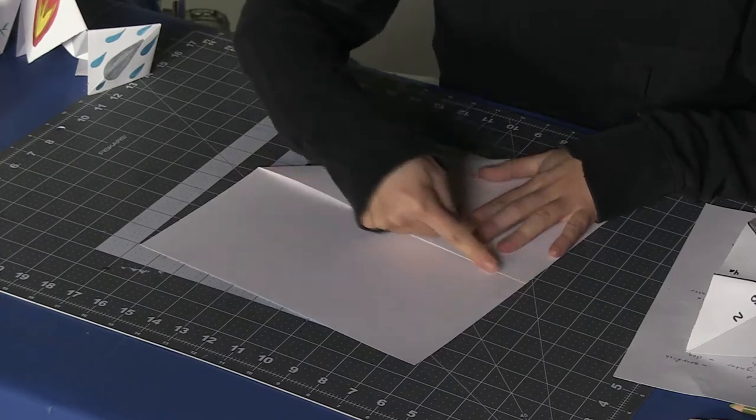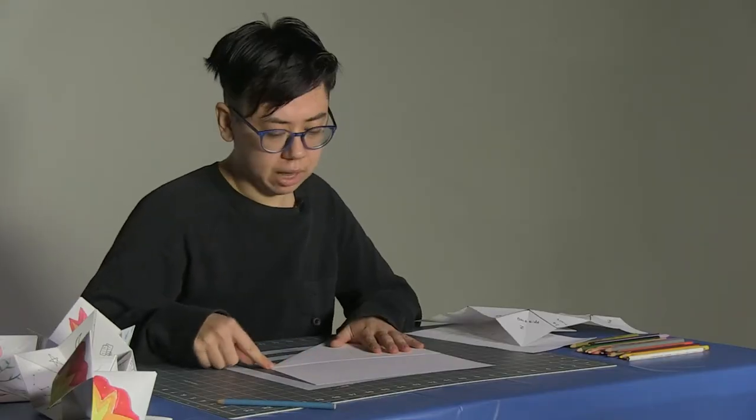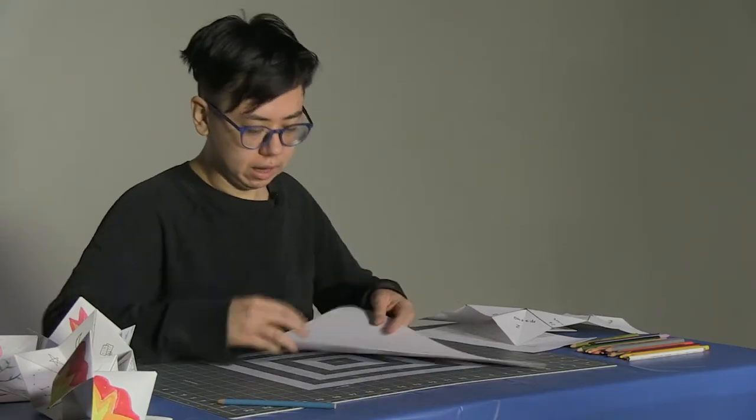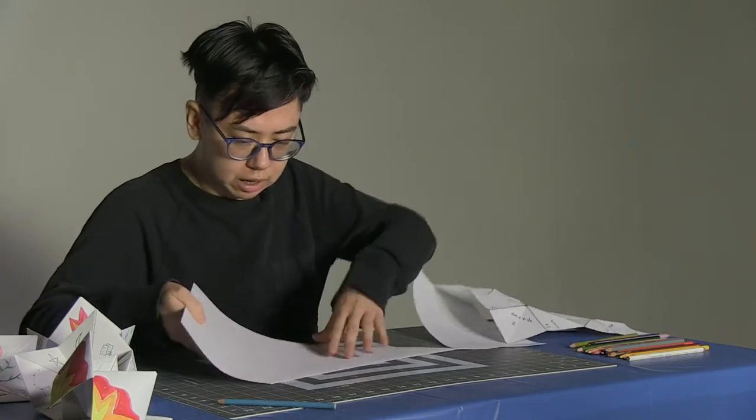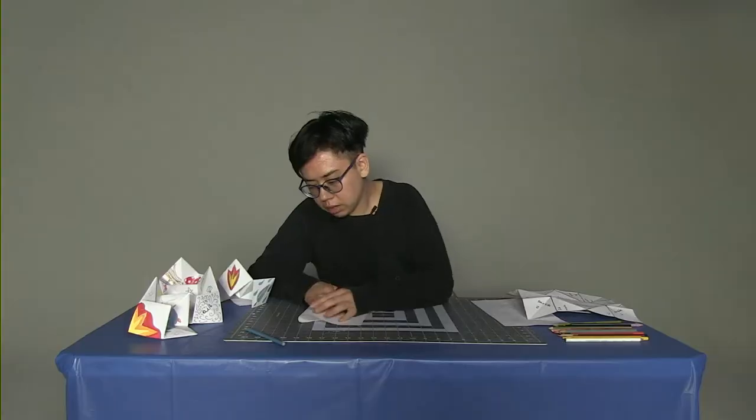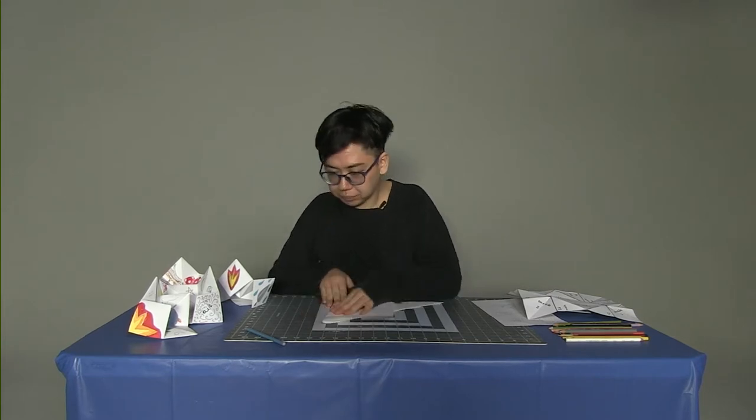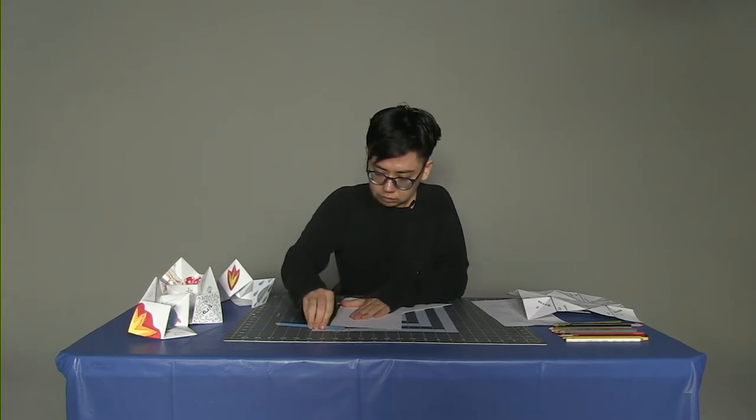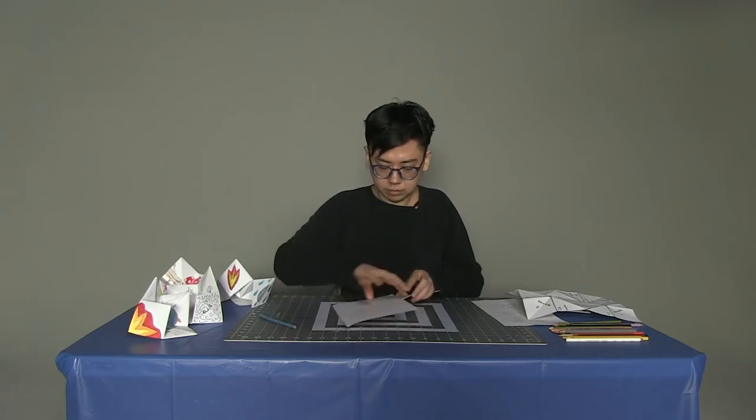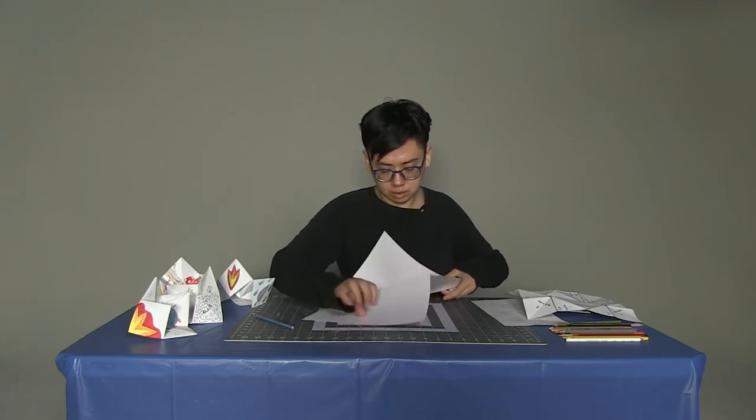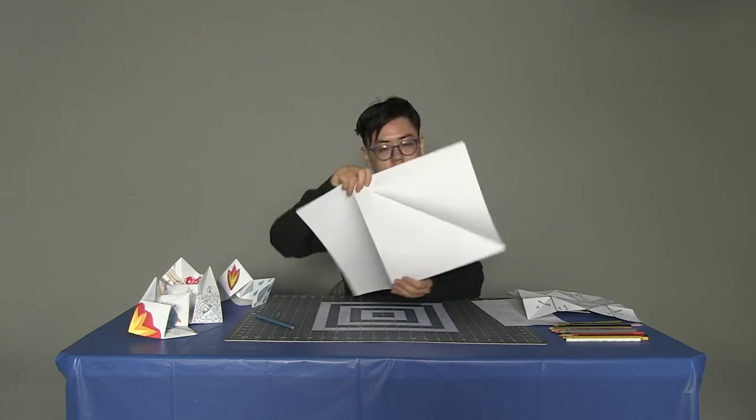If we cut right along here then we'll have a perfect square. So I'm going to go ahead and fold this part up just so we know with our fold exactly where we want to cut. And it looks like this.